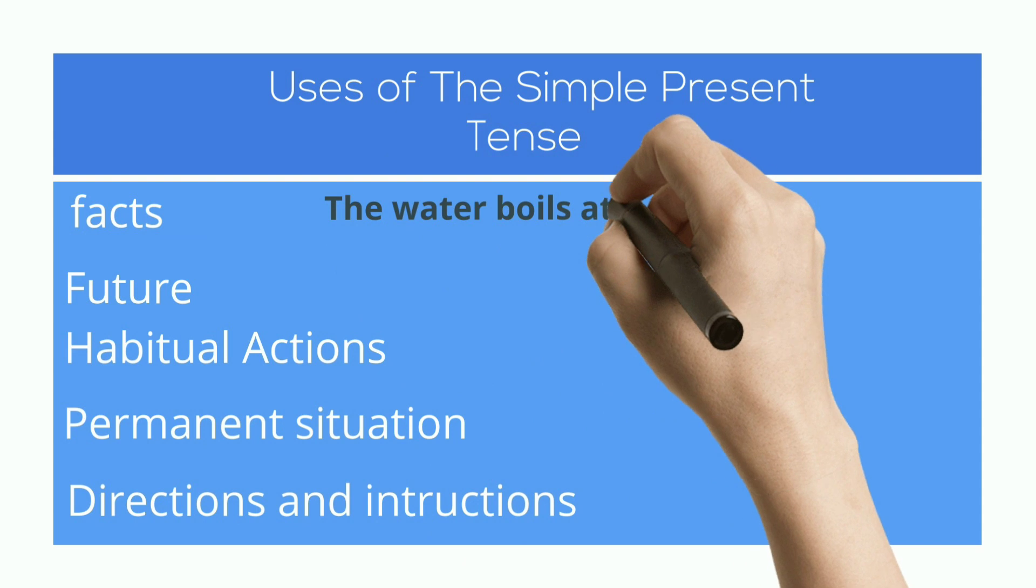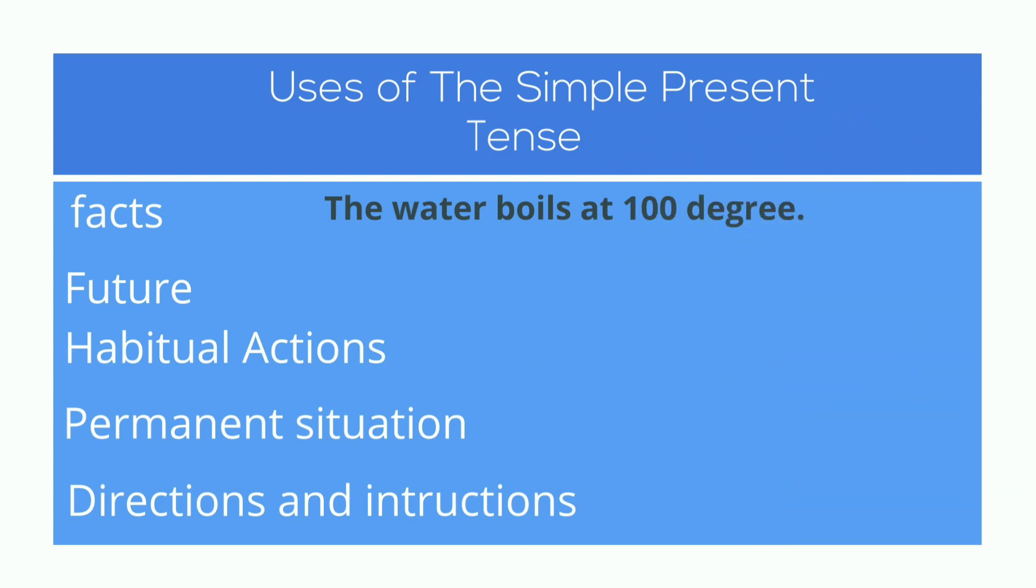For example, the water boils at 100 degrees. This is a fact. The train leaves at 4. This is something that is fixed in the future, and that is why I use the simple present tense.